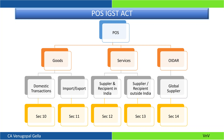What we are going to look at is: place of supply for goods in domestic transactions is discussed in Section 10, and import and export is dealt with in Section 11. When it comes to services, if supplier and recipient are both in India, it is Section 12. When either one party is outside India, it is dealt with in Section 13. In all these transactions, what we are dealing with is place of supply.